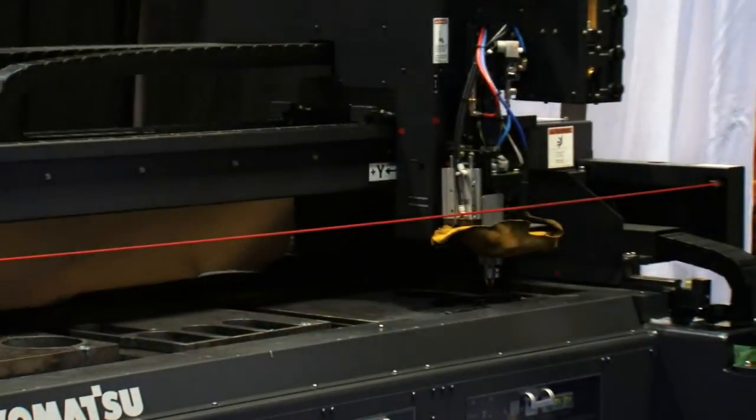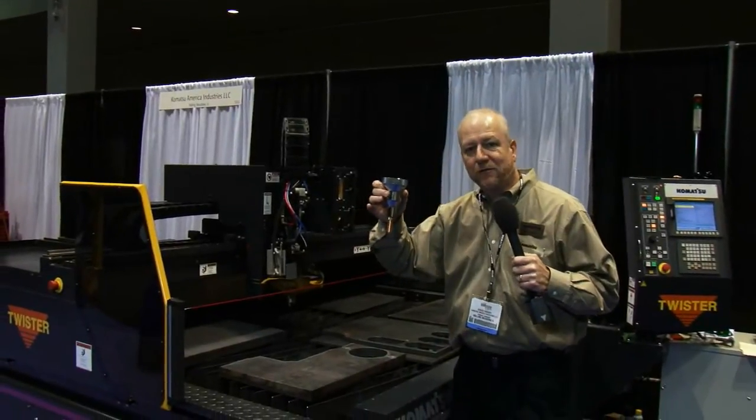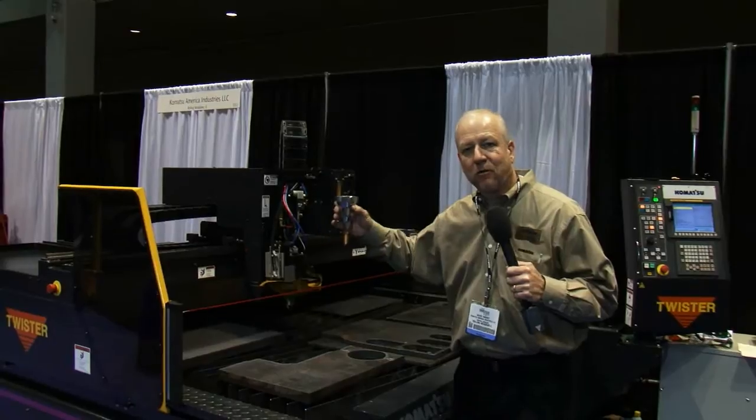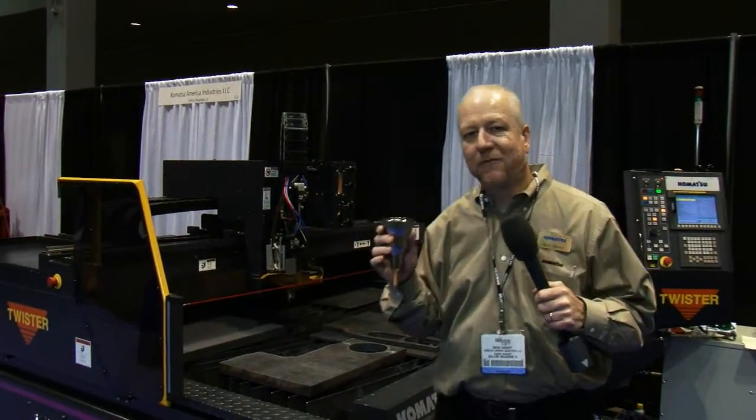It can also cut stainless steel and aluminum, 16 gauge to 3 quarter inch. With the standard torch, we can remove our standard consumables and screw the oxy-fuel head on, and we're good to go to cut up to 2 inch material. Come see us at booth 513.